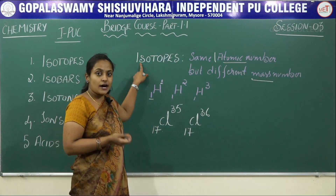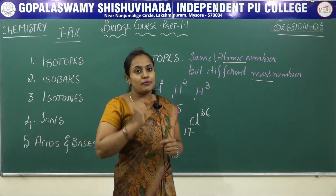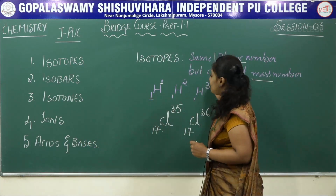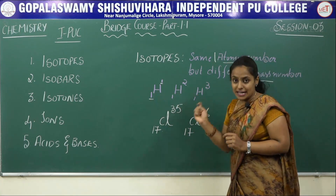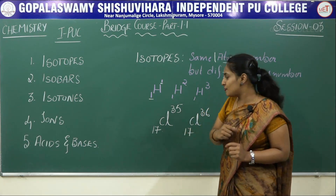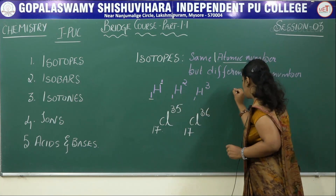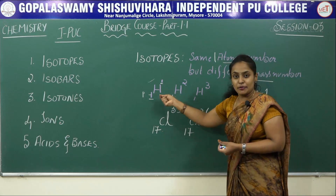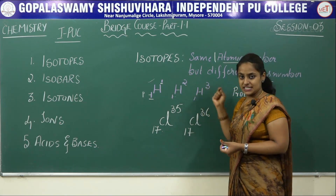Isotopes are also defined as species having the same number of protons but a different number of neutrons. As you know, atomic number means the total number of protons. Therefore the number of protons here is equal to 1. The definition says the number of protons remains the same but the number of neutrons will change.